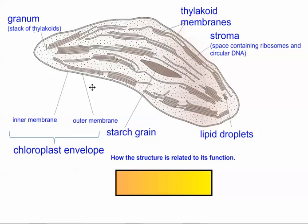The chloroplast envelope encloses its contents and can be separated into an outer membrane and an inner membrane. These aren't as significant as in the mitochondria — in the mitochondria, the inner and outer membranes are really important because the space in between is where all the protons get built up.